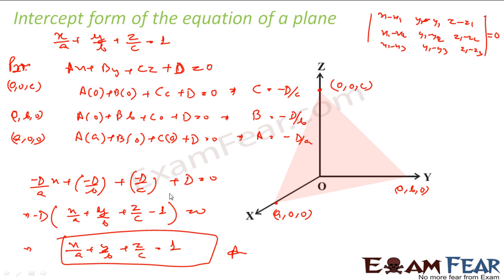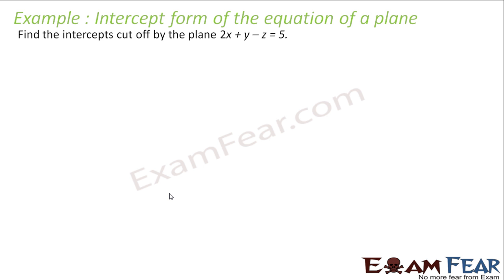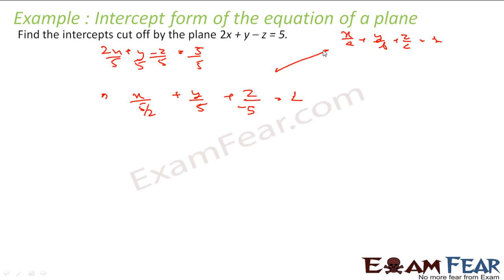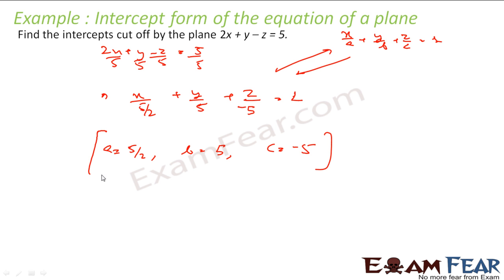Let's take an example. We have to find the intercepts cut off by a given plane. We know the intercept form is x/a + y/b + z/c = 1, so we convert the given equation into this form by dividing everything by 5. We get x/(5/2) + y/5 + z/(−5) = 1. Comparing, we get a = 5/2, b = 5, and c = −5. These are the intercepts.